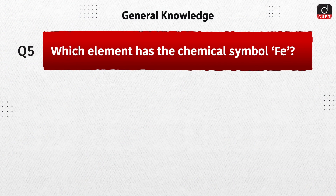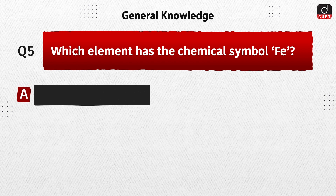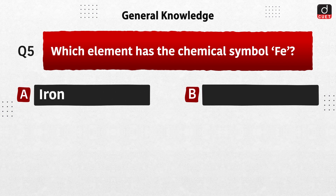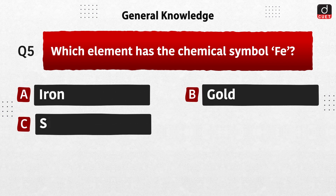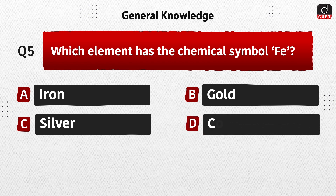Next question: which element has the chemical symbol Fe? Iron, gold, silver, or copper? The correct answer is option A, iron.